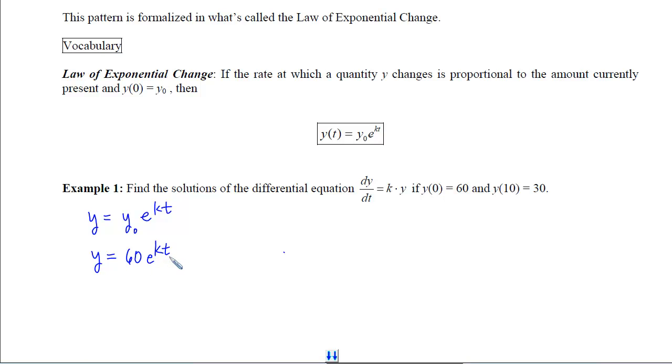And then we can plug in the second point, which is (10, 30), and use it to figure out what k is. So we know 30 came out when t was 10. So if I isolate k now, I will get 1/2 equals e to the k times 10. If I log both sides, I will get k times 10 on the right. So k is now 1/10 the natural log of 1/2.